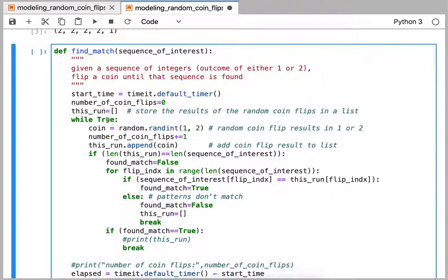So inside the while loop here, we're basically doing a coin flip and then we're seeing whether that sequence of coin flips matches the sequence that we put in as the thing that we're looking for. Initially, if we don't find a match, we'll consider the outcome false, and then we're just going to incrementally search through those two lists.